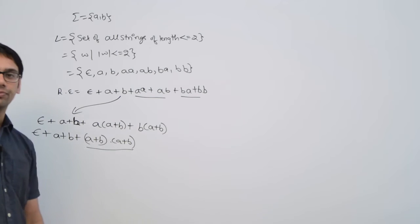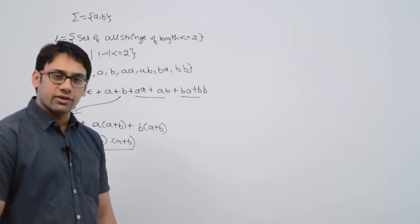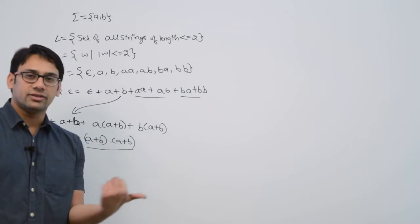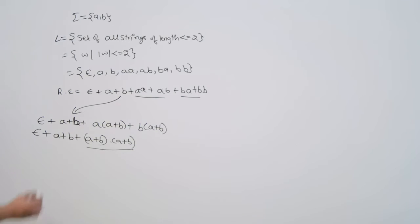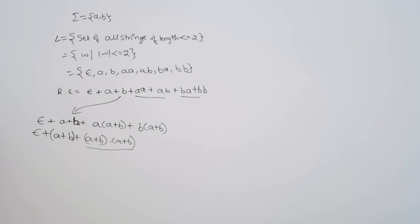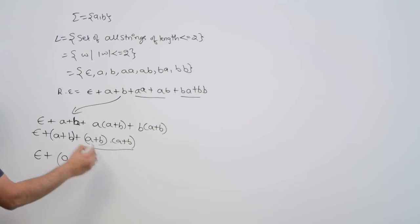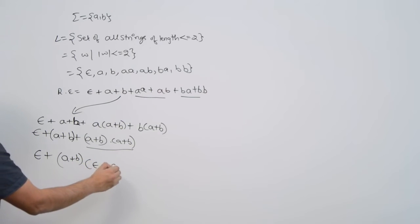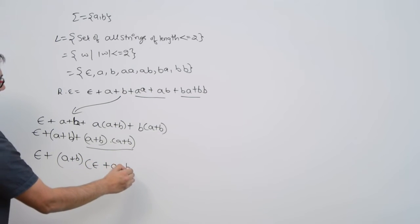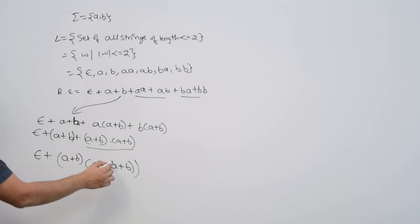Can we do something better? Using brackets, you can take (a+b) as common again, so it can be represented by epsilon + (a+b) + (a+b)(a+b). You can also represent this same thing in a further simplified way.